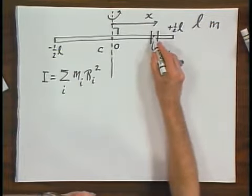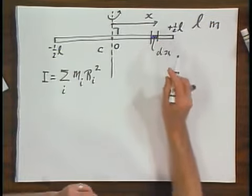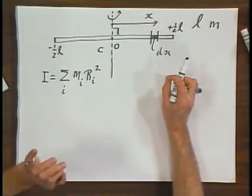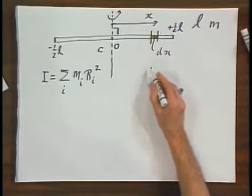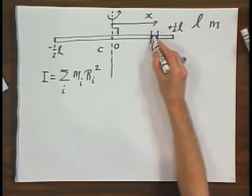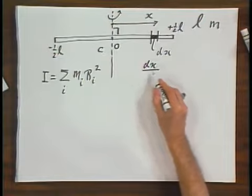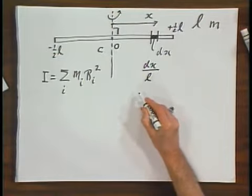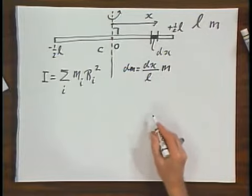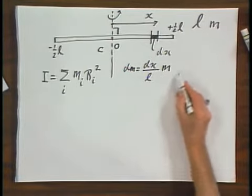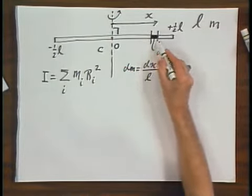What is the amount of mass that is in here, this little element dm, mass dm? Well, the fraction of the total mass that is in here is dx divided by L, and the total mass is M. So this is the mass of this little section which has length dx.